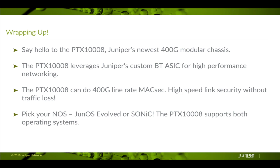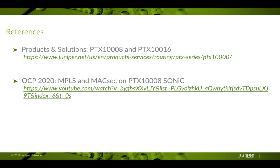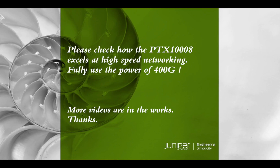Say hello to Juniper's PTX 1008 — a system that can meet all your 400G high-speed networking needs. The heart of the system is the BT-ASIC. The PTX 1008 can do 400G line rate MaxSec, giving you high-speed link security without traffic loss. And you can pick your NOS: JunOS Evolved or Sonic. The PTX 1008 supports both operating systems for maximum flexibility. Here are some references for the PTX 1008 and its big brother, the PTX-10016 — refer to the product data sheet. We also have OCP videos showing Sonic running on the PTX 1008. Please check out the PTX 1008 and enjoy the full power of 400G. Stay healthy and stay safe. Take care, bye.